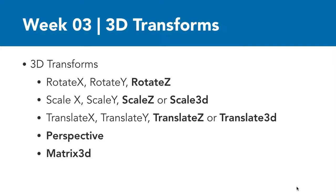To create 3D movement we use 3D transforms, and the transform property is the same one used for 2D transforms, so you're already familiar with it. The transform property accepts a range of functions as values, each applying a different sort of transformation. You should already be familiar with many of these functions as they're similar to or the same as their 2D counterparts. We still have rotate X and rotate Y, but now we add rotate Z. We also have scale X, scale Y, and now scale Z or scale3d. Additionally, we have translate X, translate Y, and now translate Z and translate3d. We also have perspective and matrix3d.